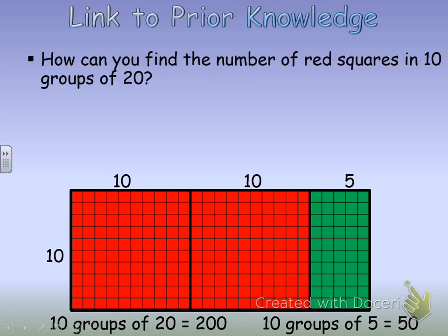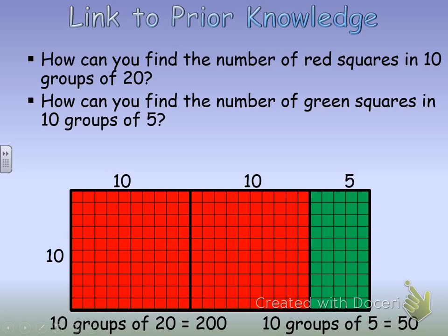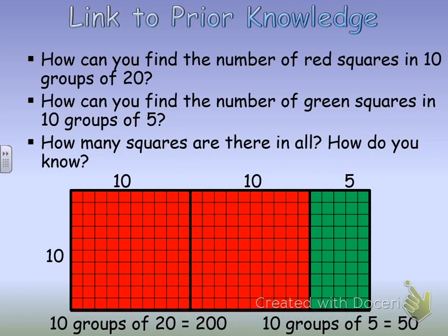How can you find the number of red squares in 10 groups of 20? I can look at my 10 groups of 20 and know that 10 times 10 equals 100, and since I have that twice, I have 200. How can you find the number of green squares in 10 groups of 5? In 10 groups of 5, it's really 5 times 10, which gives me 50.